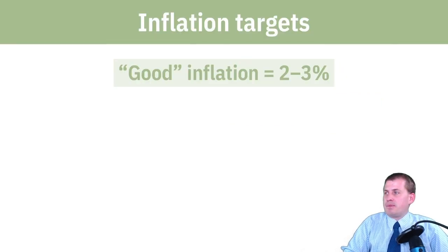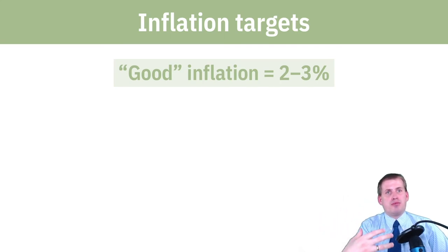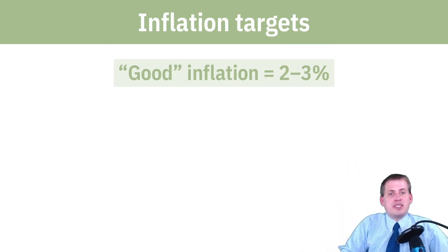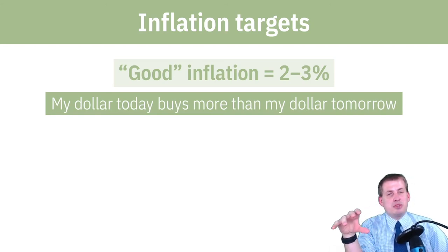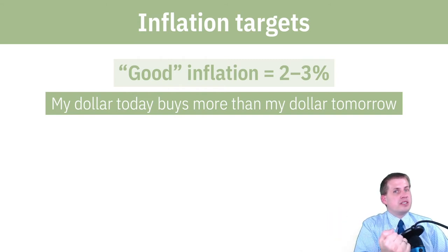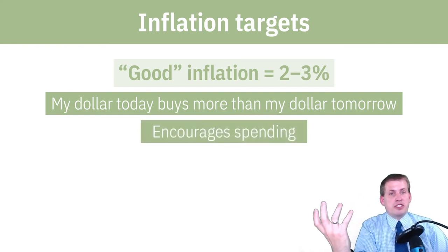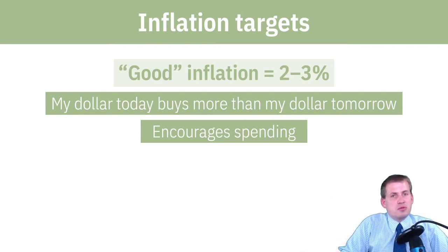Keeping track of inflation is important. Inflation in general is not necessarily a bad thing. The Federal Reserve has two main jobs: keep unemployment low, and maintain good levels of inflation — typically around 2–3%. We want some inflation because it encourages spending. If your dollar today buys more than your dollar tomorrow, you're incentivized to spend it now rather than hold on to it for years, which encourages economic activity and growth.